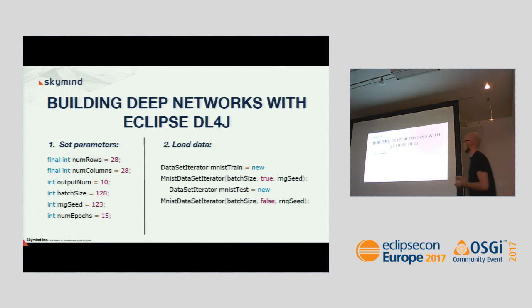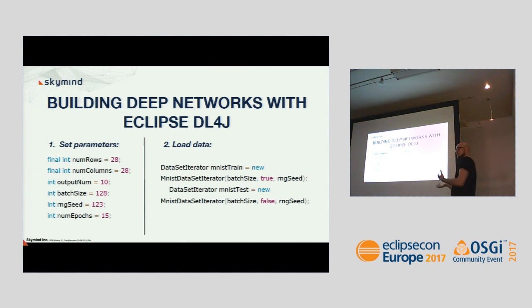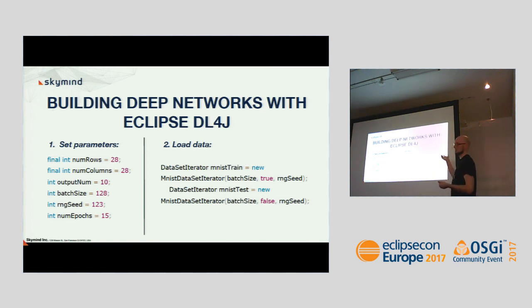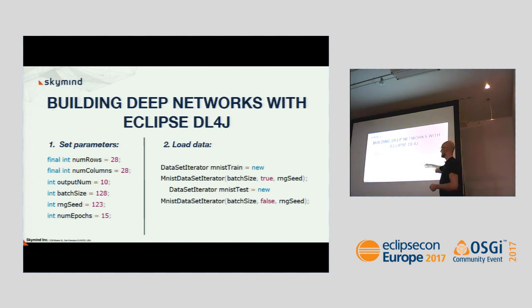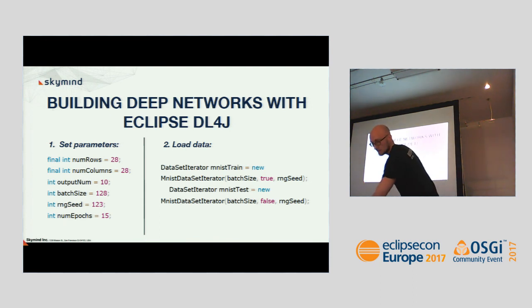The next step is loading the data. We want training data to train the algorithm and test data to evaluate it, so we create two data set iterators of the given batch size using that random seed — an MNIST train iterator and an MNIST test iterator. It's fairly simple.